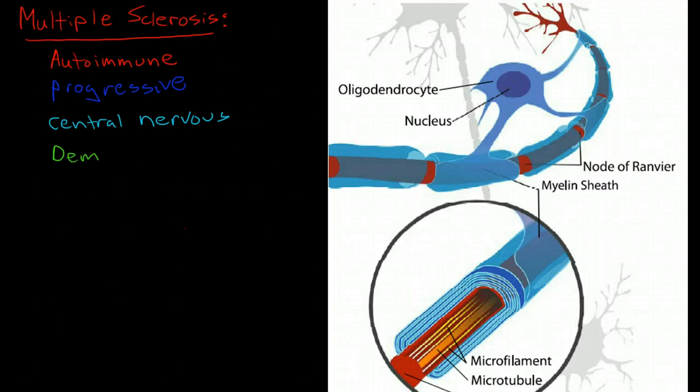So because it is a demyelinating disorder we're going to start by a discussion of the oligodendrites. Now the oligodendrites are glial cells. So glial cells are cells that support the functioning of neurons that exist only in the central nervous system.